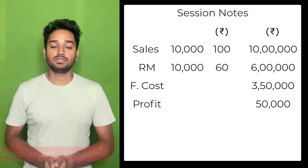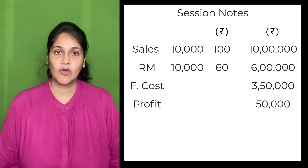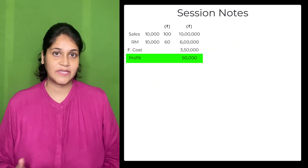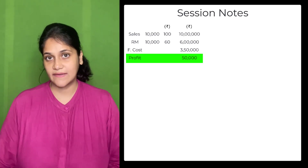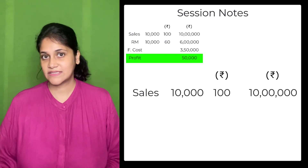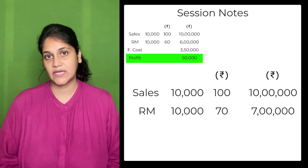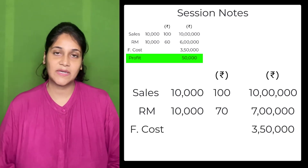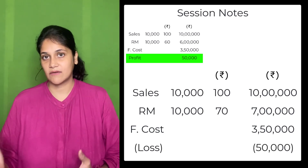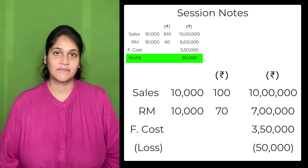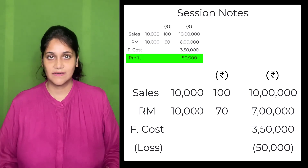So our profit came to ₹50,000. Now the problem is that the raw material price, which was ₹60, is going to increase to ₹70 — we just spoke to the vendor. Effectively, our sales will remain ₹10 lakh, but the raw material cost will increase from ₹6 lakh to ₹7 lakh. Fixed cost stays the same, so our profit of ₹50,000 will turn into a loss of ₹50,000. We cannot take a loss at any cost, so I need your valuable suggestions.